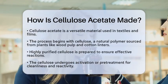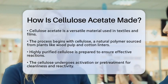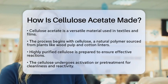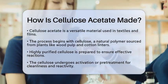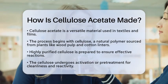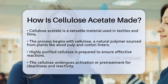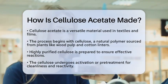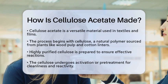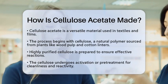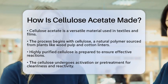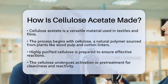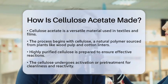First, we start with cellulose, which is a natural polymer found in plants like wood pulp and cotton linters. The first task is to prepare this raw material. We need highly purified cellulose to ensure it reacts well. This cellulose is activated or pre-treated to make it clean and reactive.